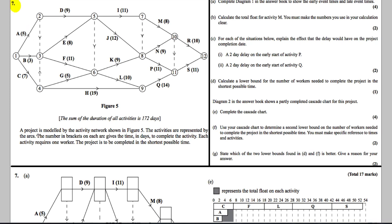Question 7. We're told a project is modelled by the activity network in figure 5. The activities are represented by the arcs. The number in brackets on each arc gives the time in days to complete each activity. Each activity requires one worker. The project is to be completed in the shortest time possible. The sum of the duration of all the activities is 172 days.